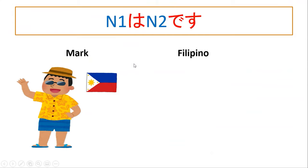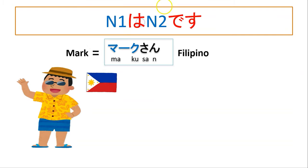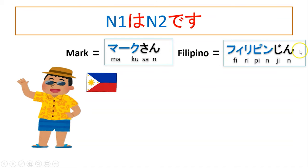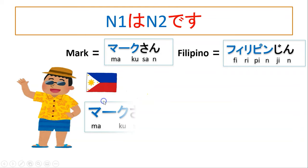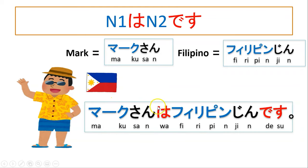What if gusto kong gumawa ng sentence na 'Si Mark ay Filipino — Mark is a Filipino'? Nationality naman. Si Mark, gamitin natin ang Maku-san. Ang Filipino sa Japanese ay Firipin-jin. I-describe lang natin na Filipino si Mark. Ang topic natin ay si Mark: Maku-san wa Firipin-jin desu — 'Si Mark ay Filipino.'